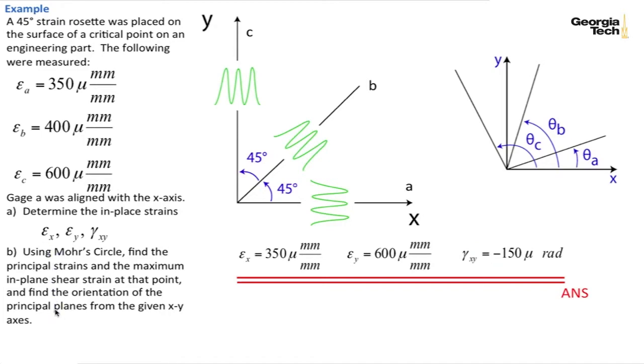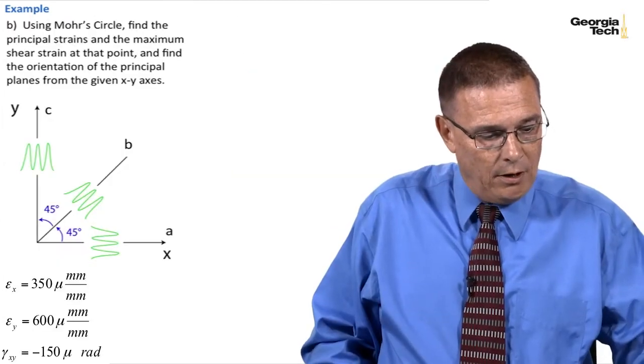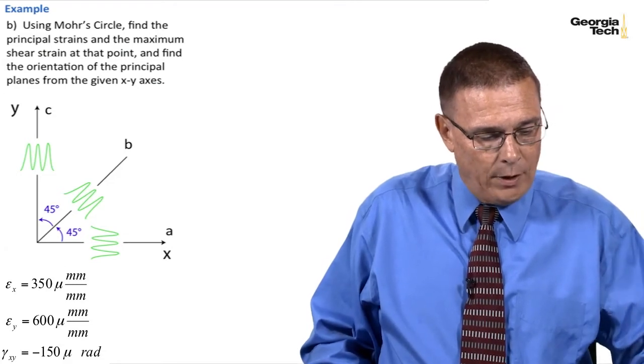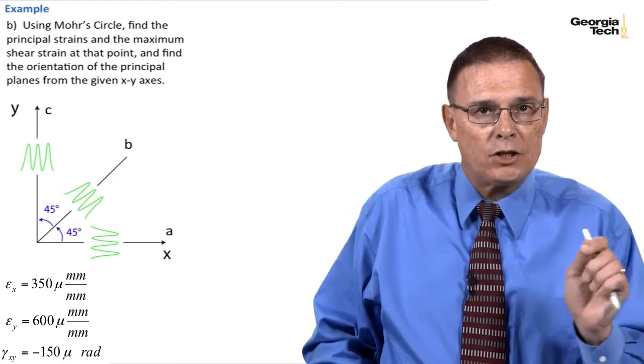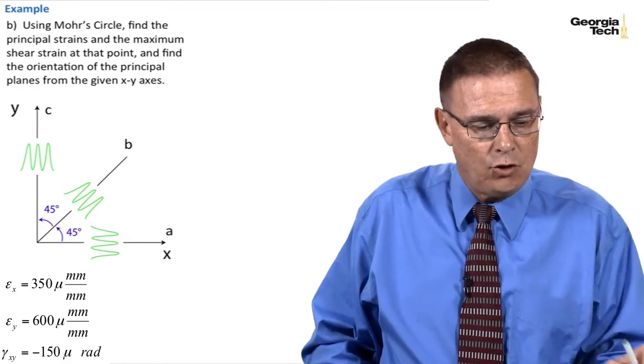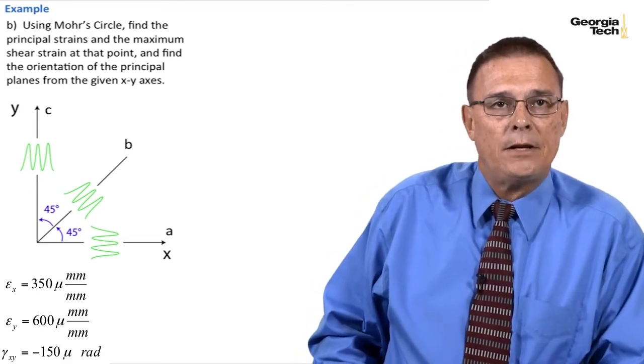Now, today, we're going to use Mohr's circle to find the principal strains, max in-plane shear strain, and the orientation of the principal planes. So here is our in-plane strains, and what I'd like you to do now is to draw a small element, and show the strains on that element, and come on back.